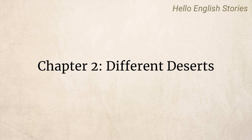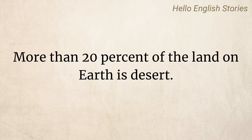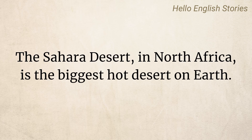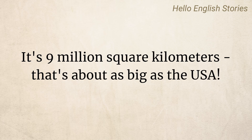Chapter 2: Different Deserts. More than 20% of the land on Earth is desert. There are many different deserts. The Sahara Desert in North Africa is the biggest hot desert on Earth. It's 9 million square kilometers — that's about as big as the USA.